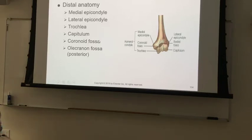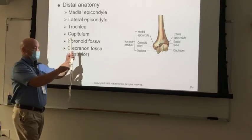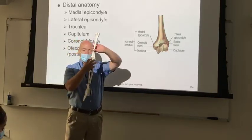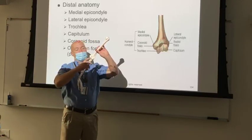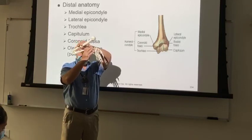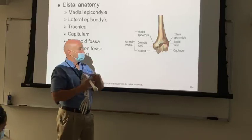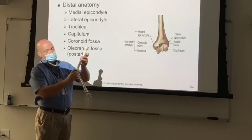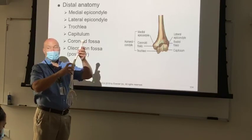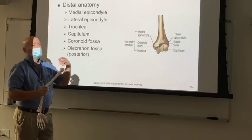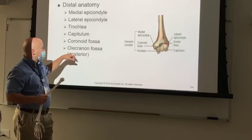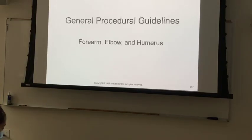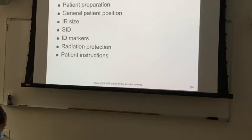We've got a coronoid fossa, and it's what receives the coronoid process — a little indentation on the anterior portion of the humerus so that whenever you fully flex, the coronoid process folds into the coronoid fossa. Likewise on the backside, whenever you extend your elbow, you've got an olecranon fossa so that the olecranon process folds into it when you extend. It's a fossa to receive the olecranon process — therefore the olecranon fossa. Probably the most complicated anatomy we're going to talk about today.